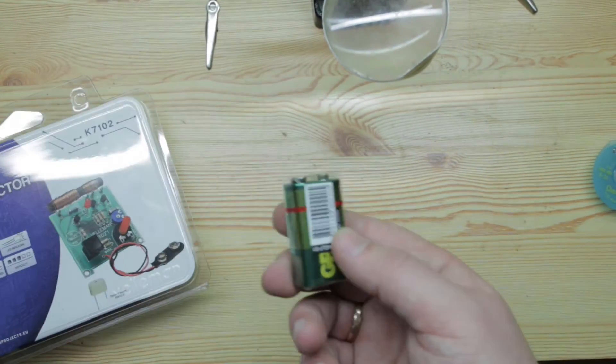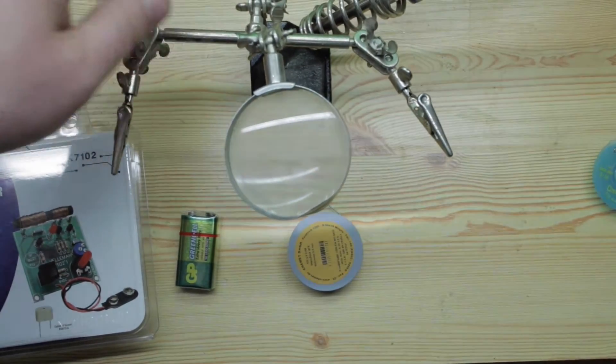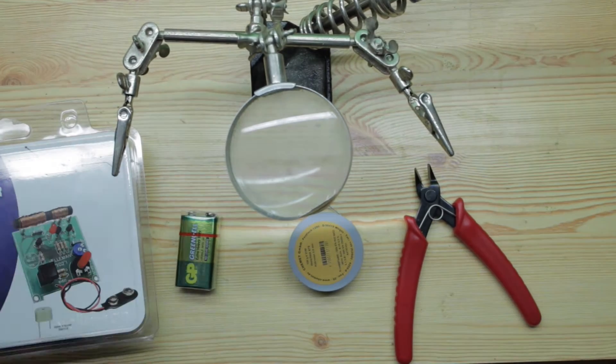All you will need is this kit, external battery, solder, soldering iron which is heating up right now, and flush cut pliers. The soldering wick is just optional if you make any mistakes.